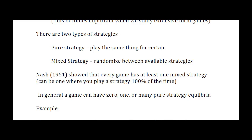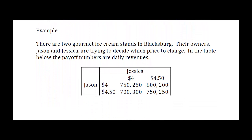Let's look at an example and see how you find equilibria of games. Suppose we're in a situation where we have Jason and Jessica, and there are two gourmet ice cream stands in Blacksburg, and their owners are trying to figure out what prices to charge. Jason's choices are to charge $4 or $4.50, and he's going to be the row player. Jessica is picking between $4 and $4.50 as well, but she's the column player.